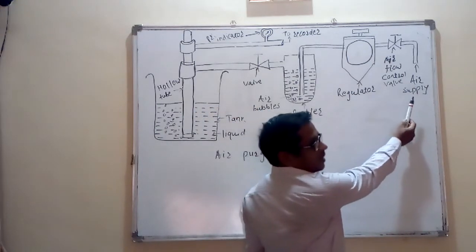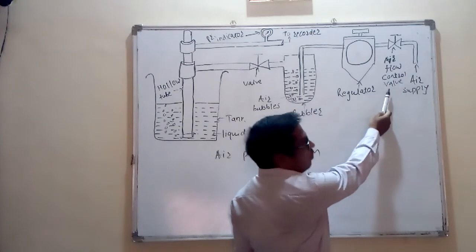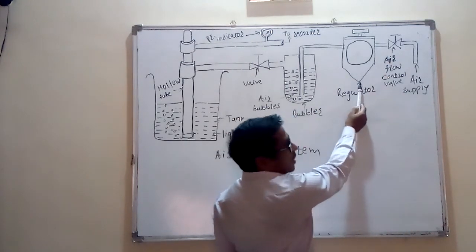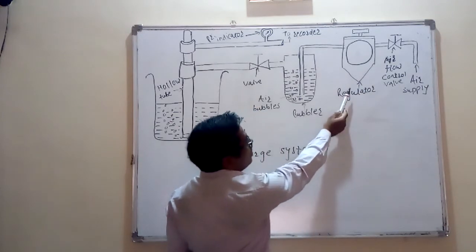This is the air supply that is pressurized air coming from air. This is air flow control valve which can be open or closed. This is pressure regulator which will control the pressure of the air in the system.